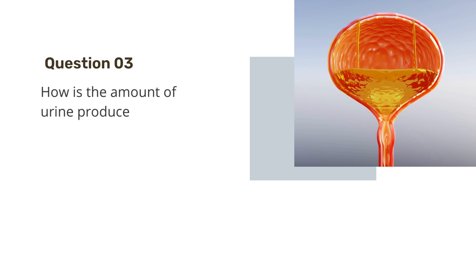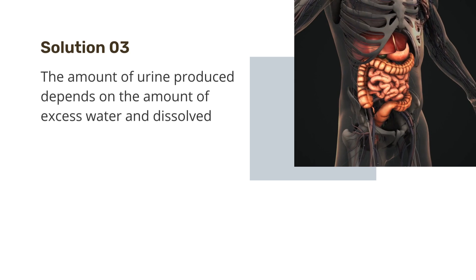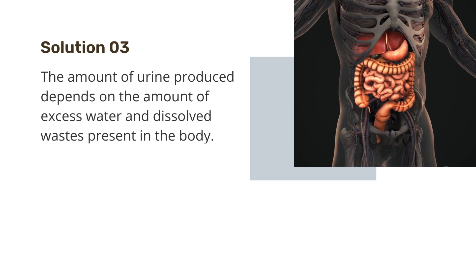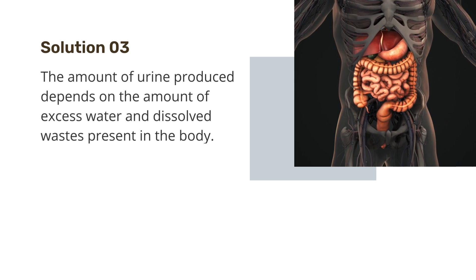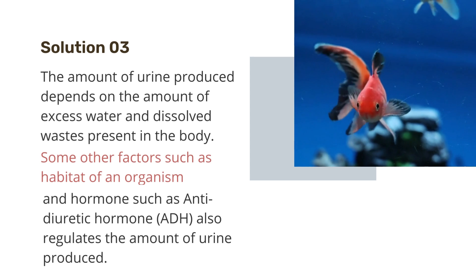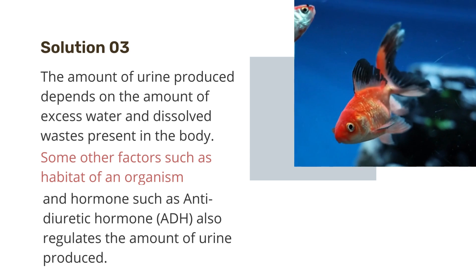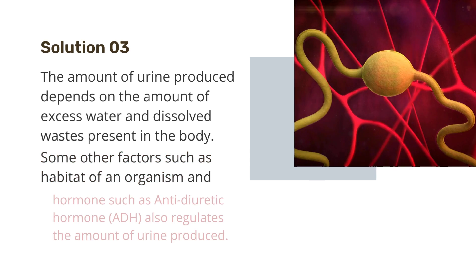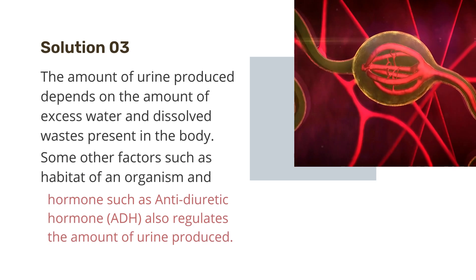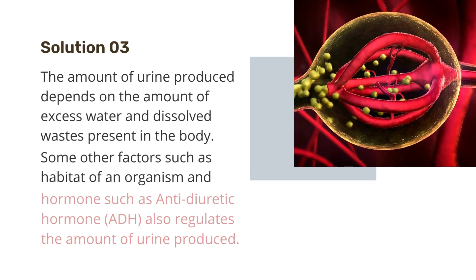The last question is: how is the amount of urine produced regulated? The amount of urine produced depends on the amount of excess water and dissolved waste present in the body. Some other factors such as habitat of an organism and hormones such as Antidiuretic hormone, ADH, also regulate the amount of urine produced.